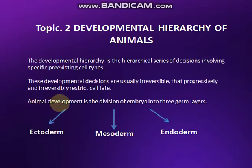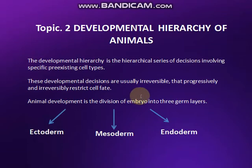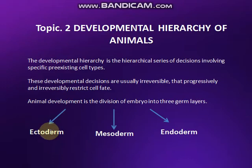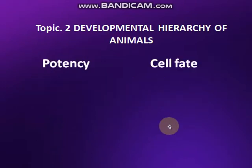Animal development is the division of embryo into three germ layers. Aapke paas ek animal embryo hota hai jo bahut initial stage hoti hai. Ab aage se yeh three germ layers ko give rise kar raha hai: number one is ectoderm, number two is mesoderm, and number three is endoderm. Aap ek hierarchy dekh rahe hain - ek embryo aage se three germ layers produce kar raha hai.